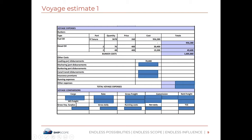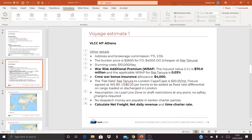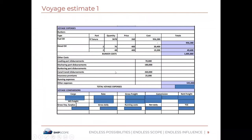Looking at the other costs: the load port cost is $70,000, discharge port is $180,000, canal transit is $260,000, and war risk insurance is $25,000. The $25,000 is derived by multiplying 0.03% by $70 million, giving $21,000, and adding the crew war bonus insurance of $4,000, totaling $25,000. Adding all these expenses gives $535,000. Adding bunker costs plus other costs, the total voyage expenses are $1,540,880.